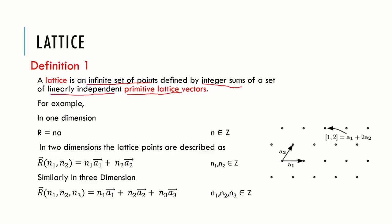For example, in one dimension, these points can be generated by translating a point by integer multiple of a. This repeat distance is the primitive lattice vector. Therefore, point n1 in one dimension is n1 times a.